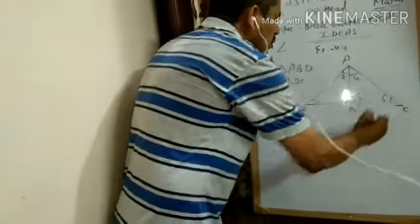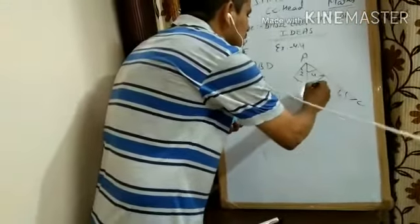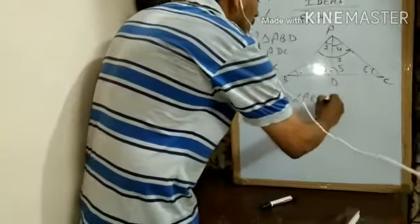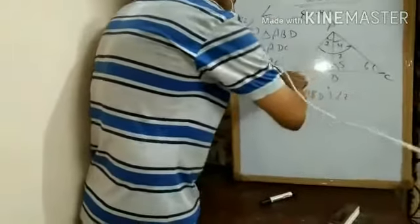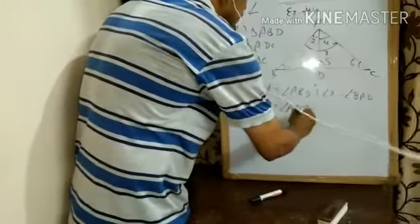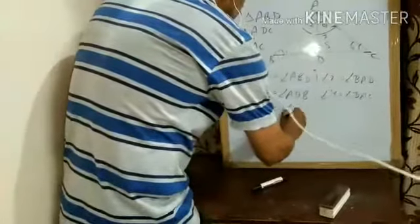We can tell the angle names: angle 1 is angle BAD. Angle 4's name is angle DAC. Angle 5's name is angle ADC. Angle 6's name is angle ACD. And the last one, angle 7's name is angle BAC. This is the type of question you have to deal with in Exercise 4.4. I hope you understand. Thank you very much, have a good day, goodbye.